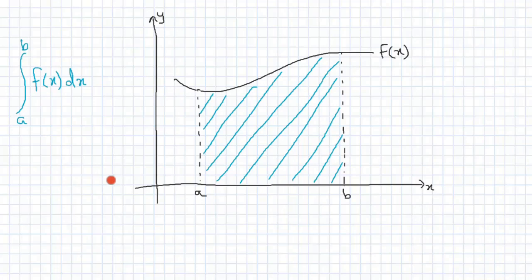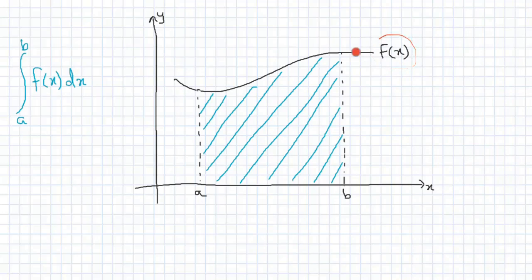First thing we need to understand is that if I'm given the function f(x), the area under the curve can be evaluated using the integral from a to b of f(x) dx. This formula gives me the exact area under the curve over the interval a to b. The question that arises is that if I'm given the function and I can evaluate the exact area, then why do I need to evaluate the approximate value? This situation arises when I'm given the curve but I do not know what the function is, or I do not know how to define the curve with a function.